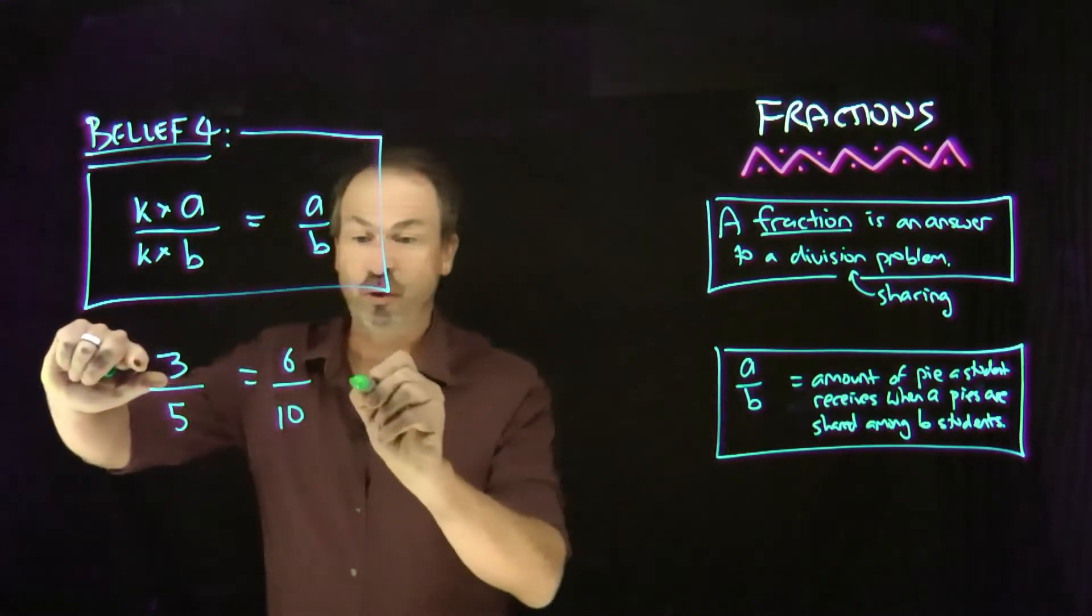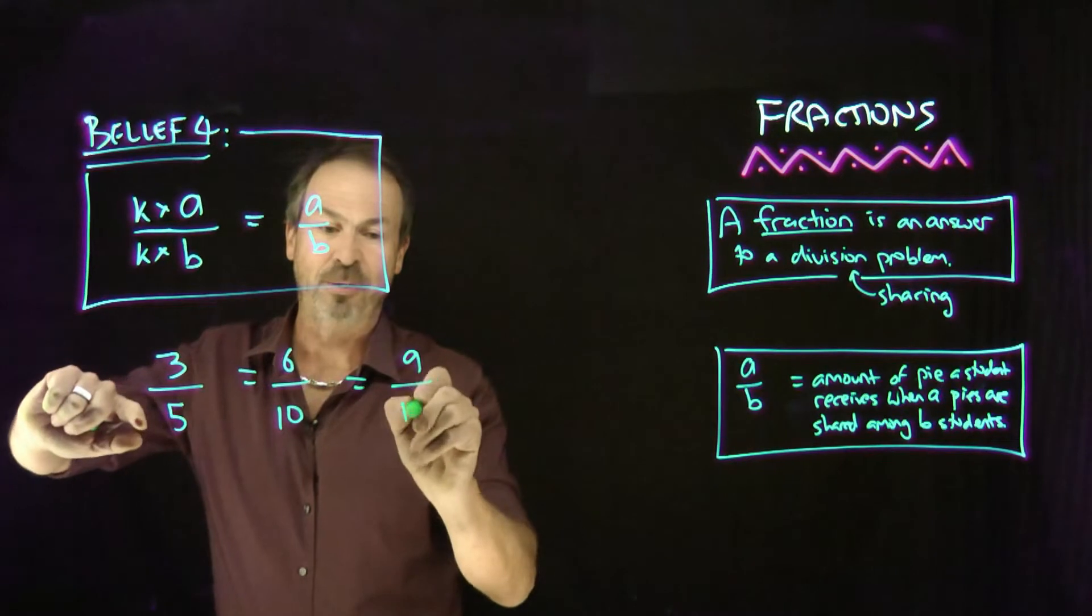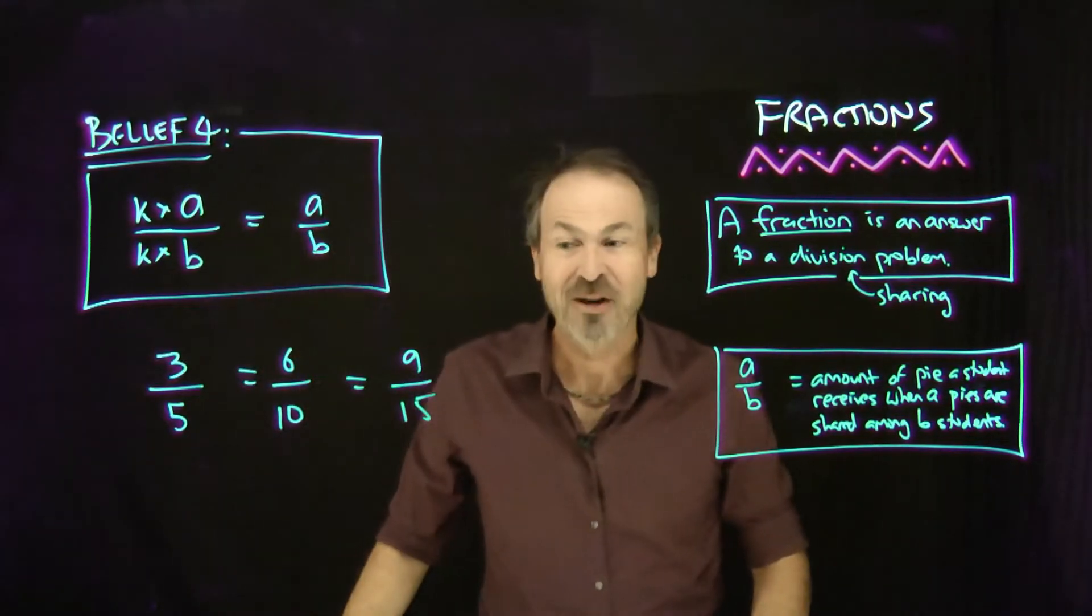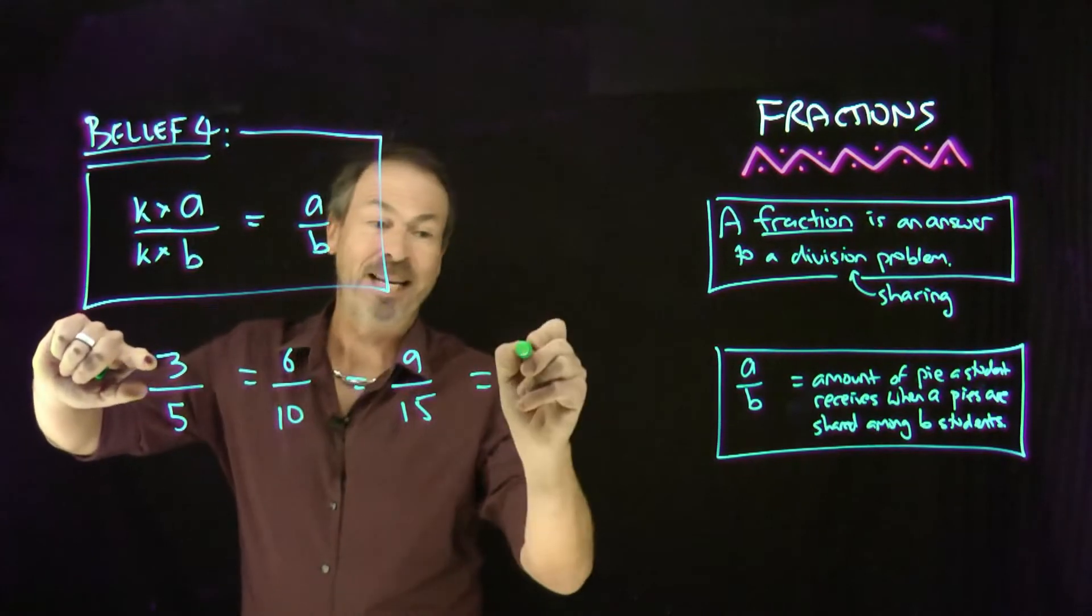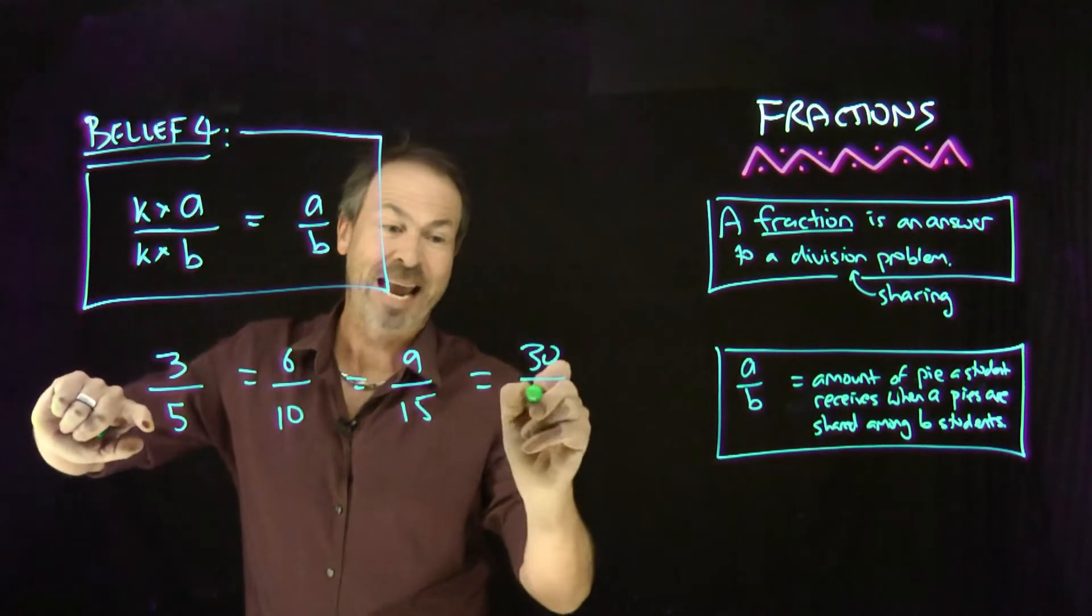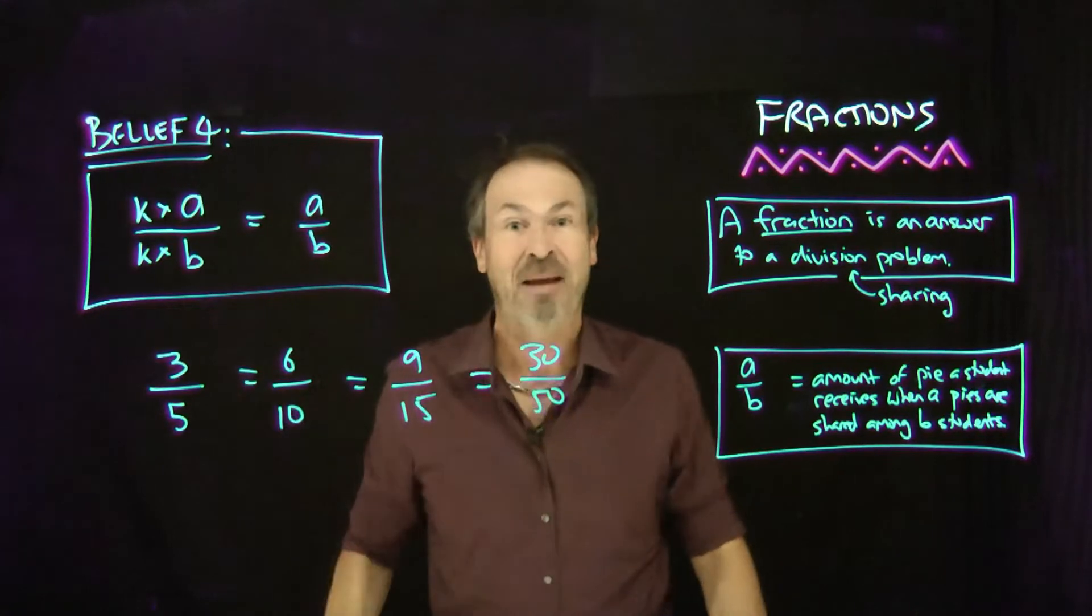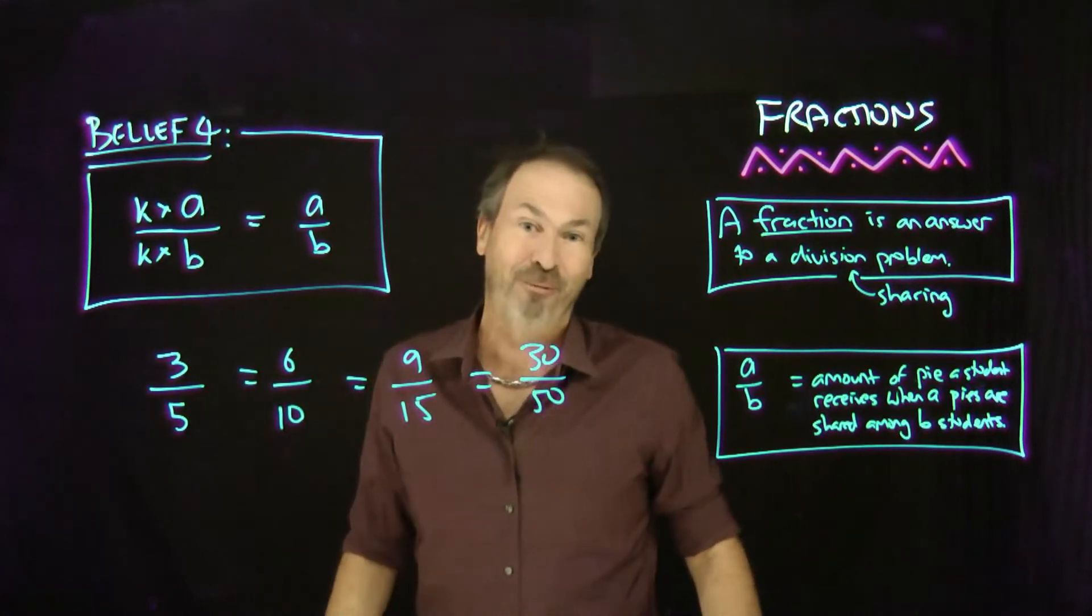Or if I triple the number of pies and triple the number of students, again, nothing changes. This must be the same fraction. Or if I actually multiply the number of pies by 10 and the number of students by 10, again, we like to believe nothing changes. It's going to be the same final result. It must be the same fraction.